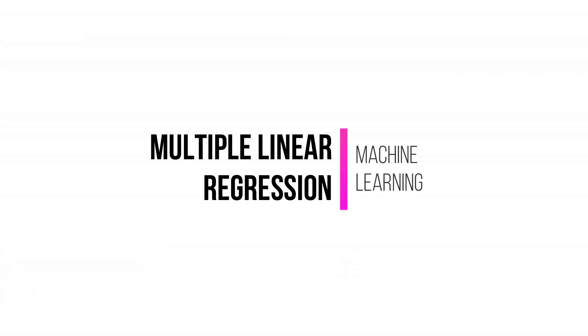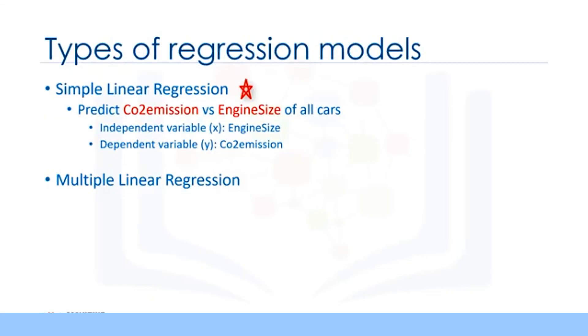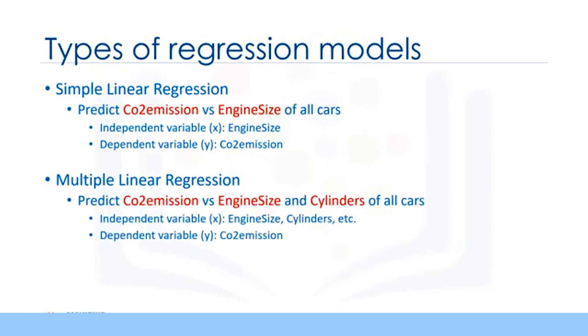There are two types of linear regression models: simple regression and multiple regression. Simple linear regression is when one independent variable is used to estimate a dependent variable. For example, predicting CO2 emission using the variable of engine size. In reality, there are multiple variables that predict CO2 emission. When multiple independent variables are present, the process is called multiple linear regression.